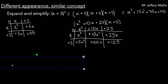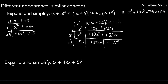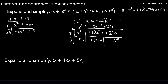Now let's take a look at a second example. Here we are asked to expand and simplify (x plus 4) bracket (x plus 5) squared. This x plus 5 all squared just means x plus 5 times x plus 5. So this expression is exactly the same as x plus 4 bracket x plus 5 bracket x plus 5, which we would answer in the same way as our previous examples.